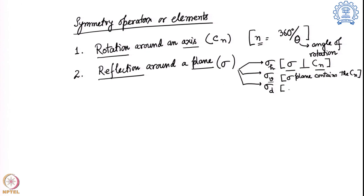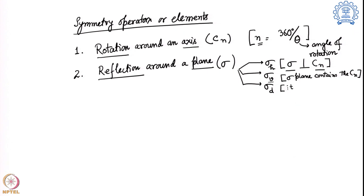Sigma d is a special class of σv — both stand in the same relationship to the principal axis Cn. However, σd has one extra feature: it bisects two C2 axes that are typically present in the molecule. Those other C2 axes must be present and are bisected by this sigma plane, which is why it is called σd, where d stands for dihedral.